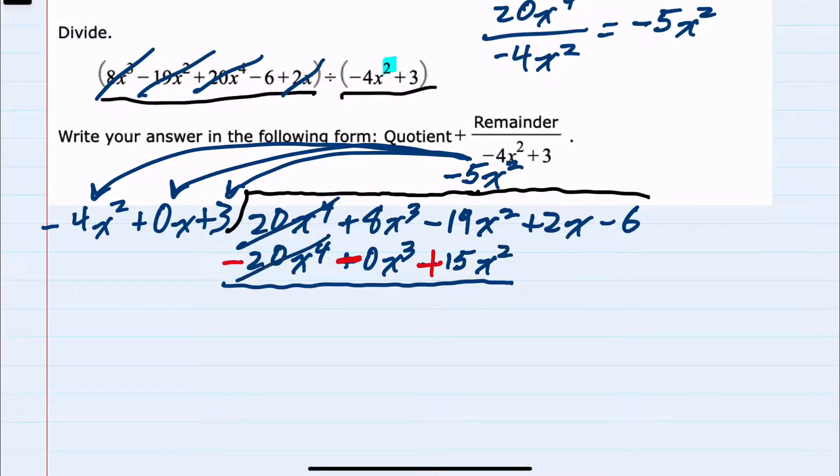And then we would need to subtract. So I will change each of these signs and add. This should always cancel the first term. We have an 8x³ plus 0x³ is still an 8x³, minus 19x² plus 15x² is a minus 4x². We would bring down the next term just as in numerical long division.